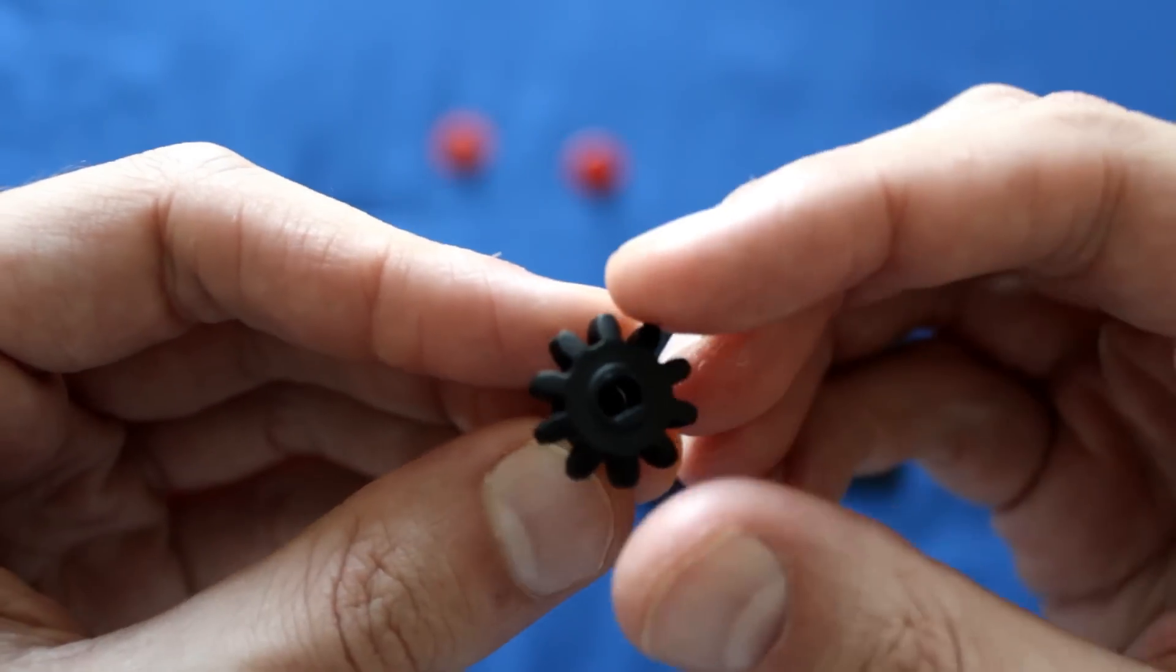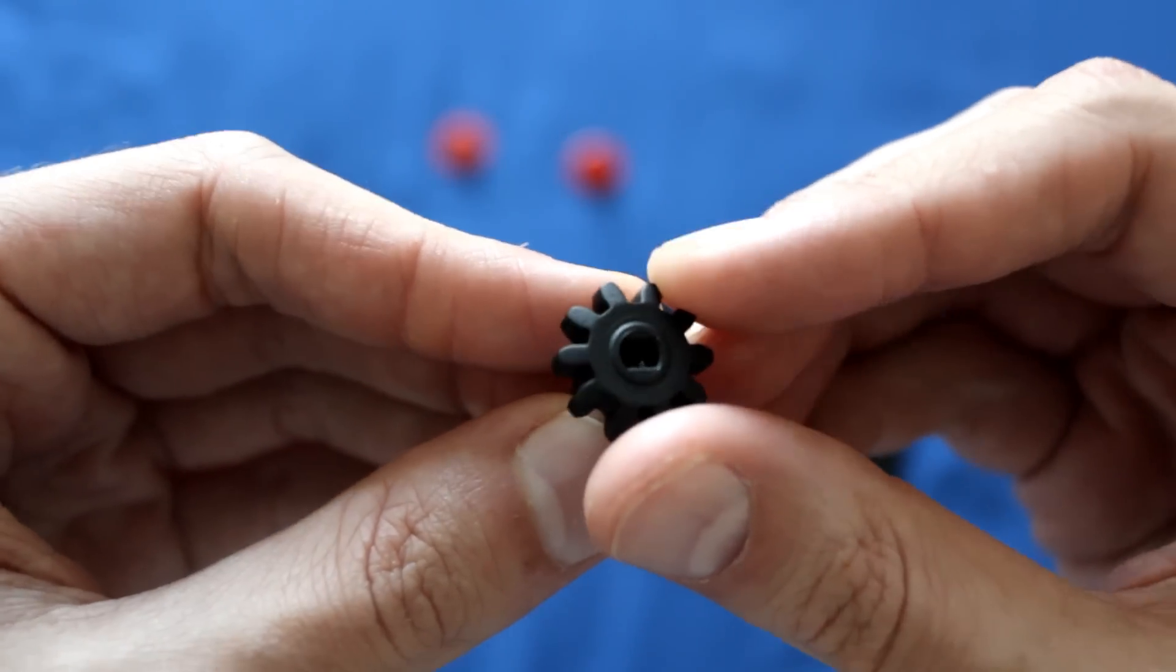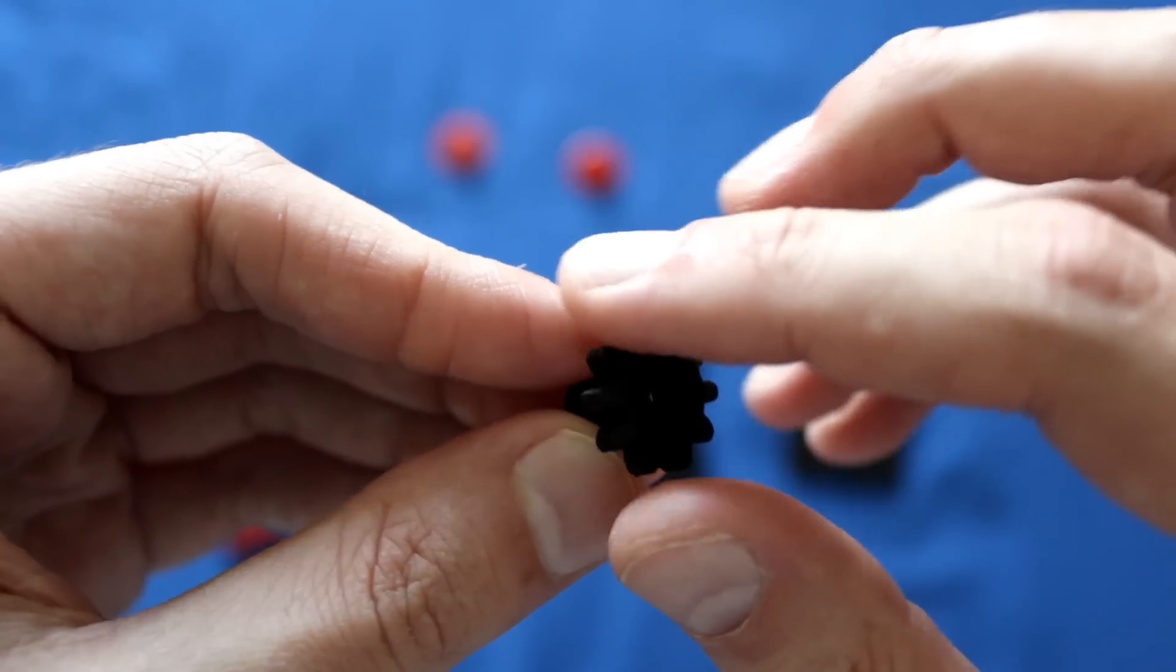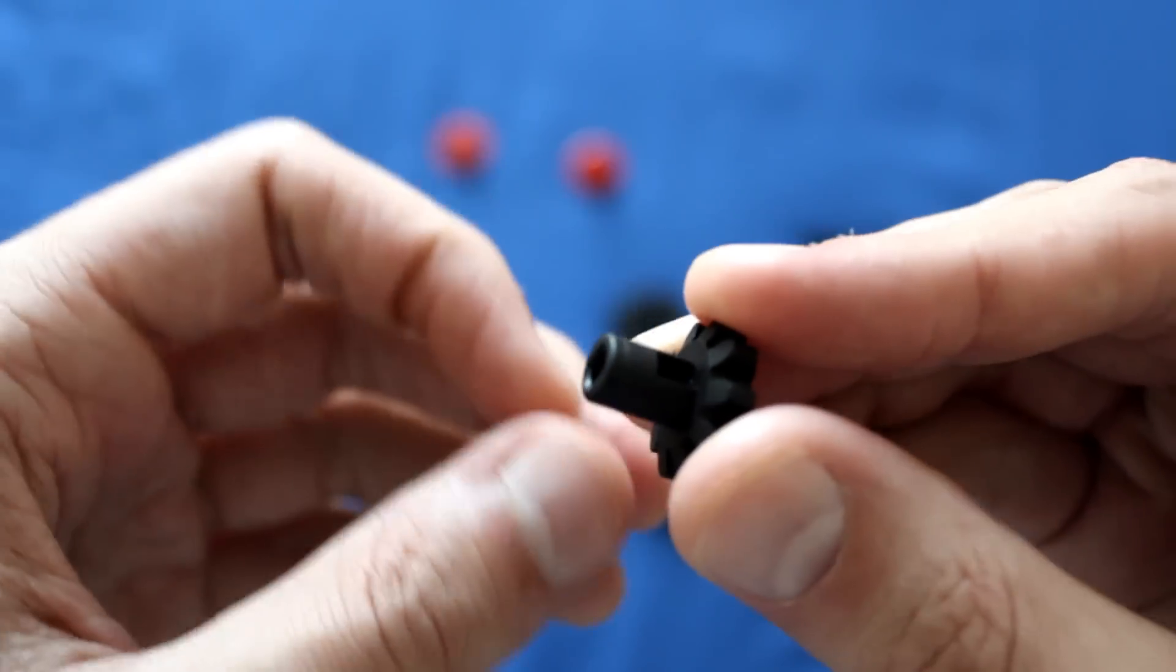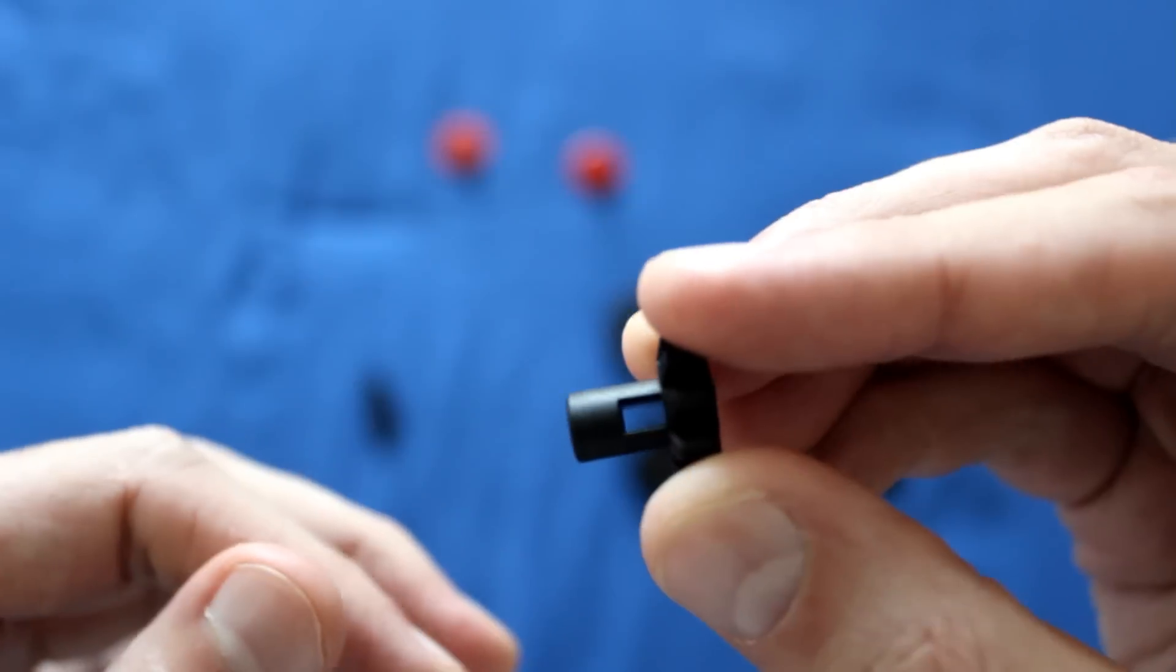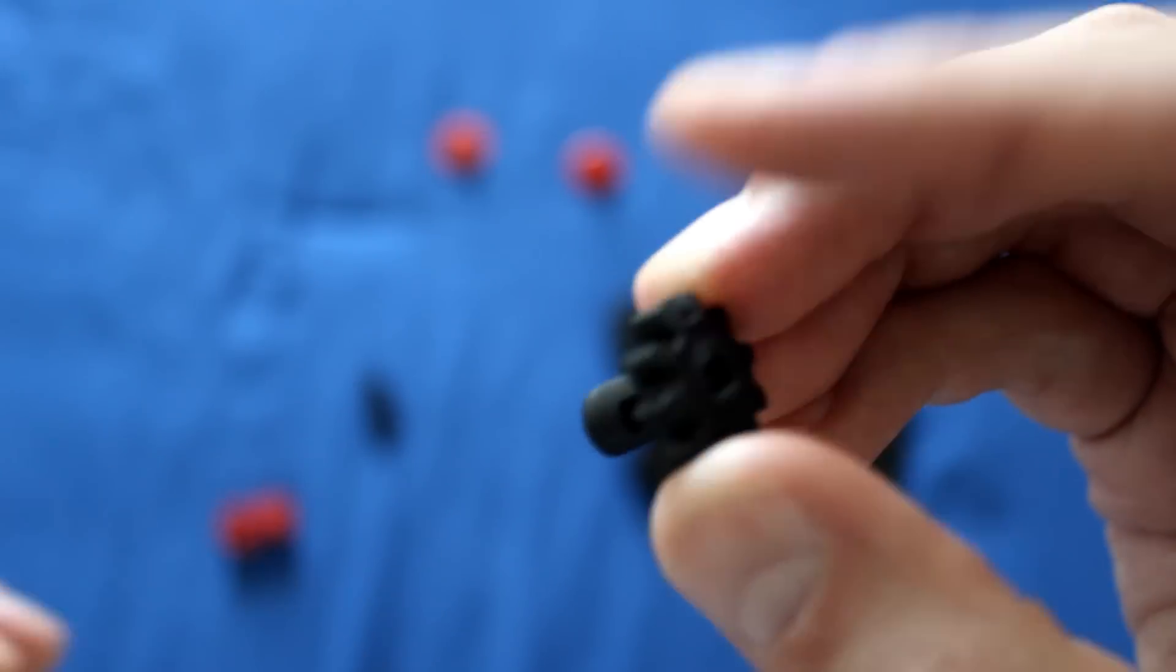You'll also need a cog wheel T10, which is what this is. You'll notice it has a clip socket here on the end, it has this cog shape here, and then it has another clip socket on the other side. It's rather short. You only need one of these.